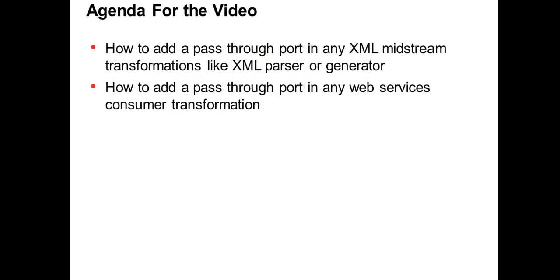Any XML transformation like an XML parser or XML generator is an active transformation, and you cannot add pass-through ports by dragging and dropping onto them like you do for expression transformations. The same goes for the web services consumer as well, so you need to add pass-through ports in a different way — not like the passive ones.